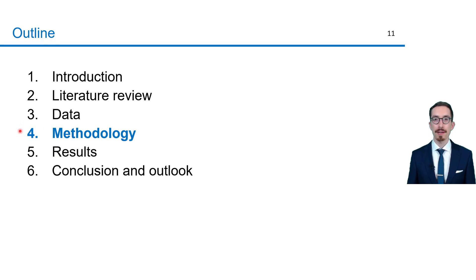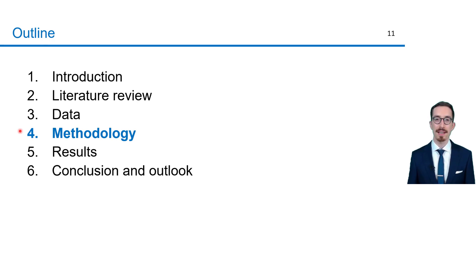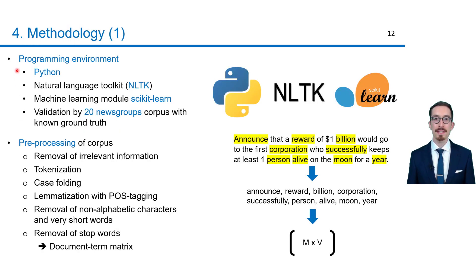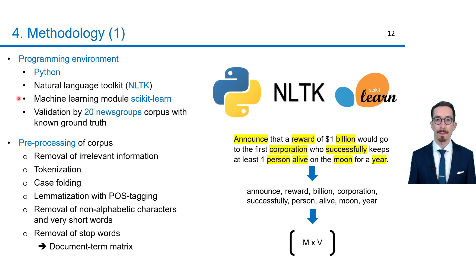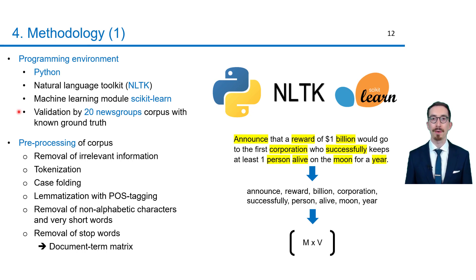Previously I introduced the methodology, but now I will explain more precisely how the previous data was analyzed. To process this data, I used Python with the natural language toolkit NLTK and the machine learning library scikit-learn. Moreover, I validated the methodology by the 20 newsgroups corpus for which the underlying topics are known. For instance, this text announced that a reward of $1 billion would go to the first corporation who successfully keeps at least one person alive on the moon for a year — it is part of this corpus and specifically the newsgroup about space.